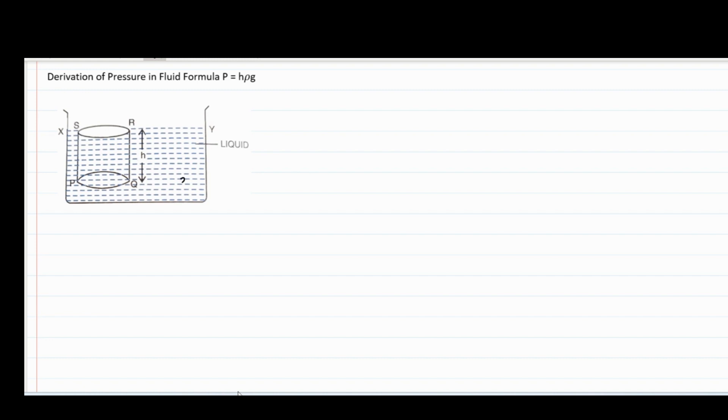Consider a vessel containing a liquid of density rho. In order to calculate pressure at depth h, consider a horizontal circular surface PQ. The cross-sectional area of this surface PQ is A.